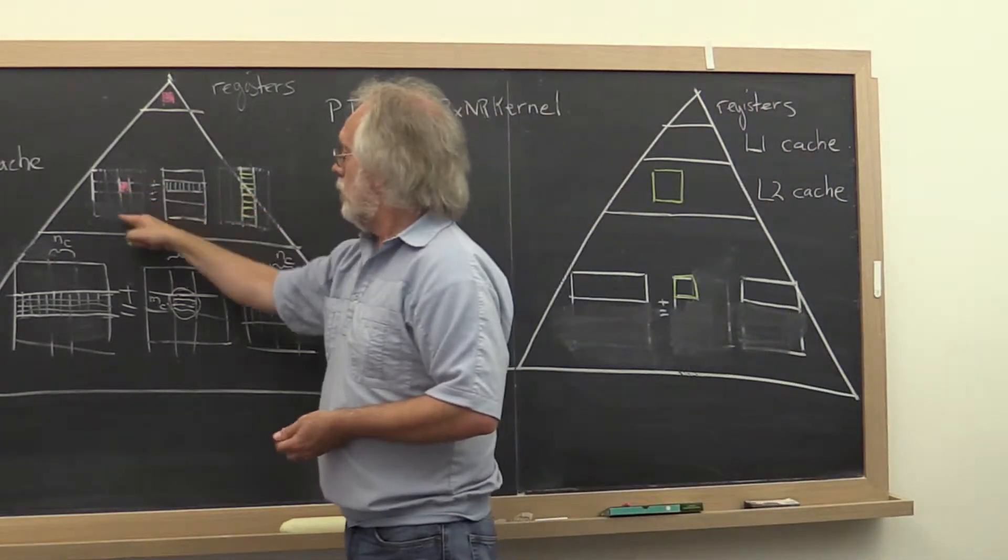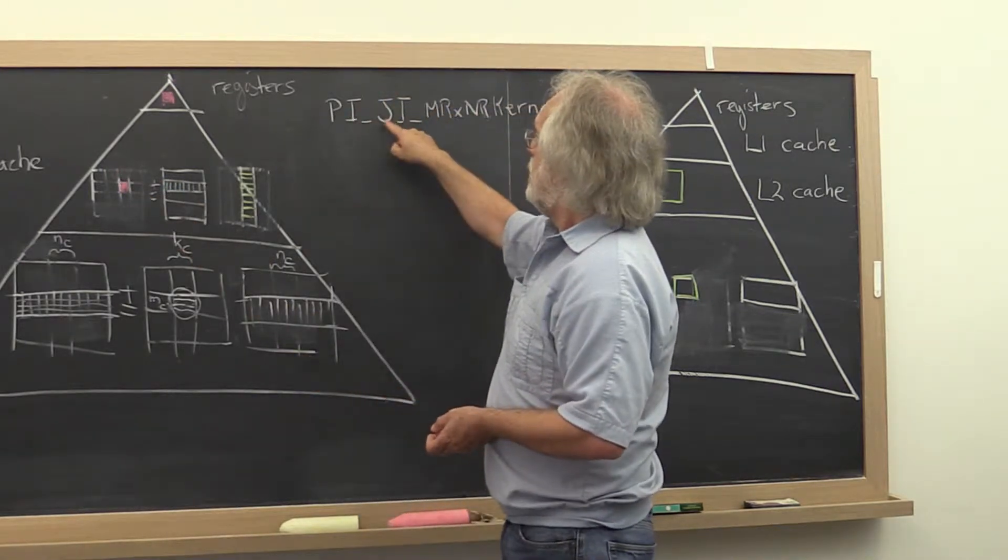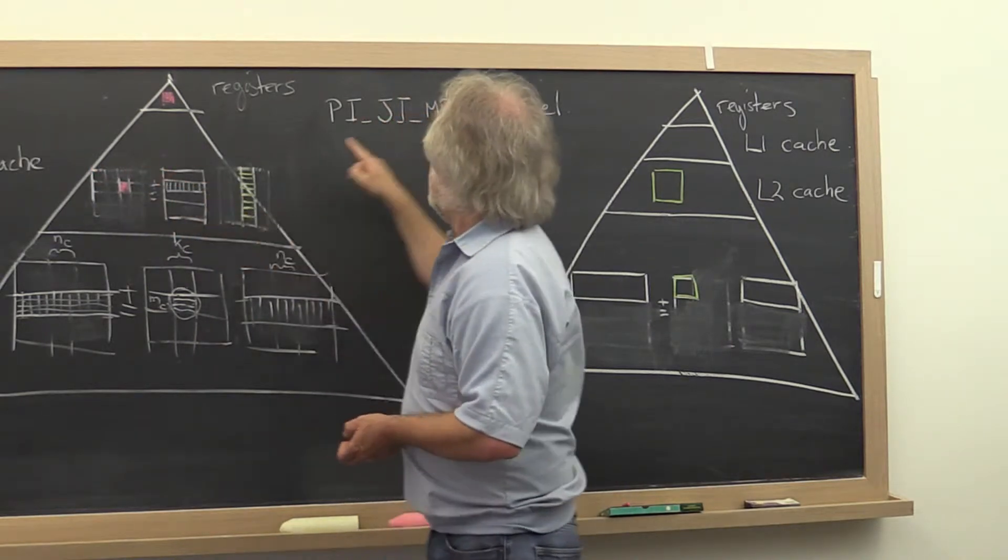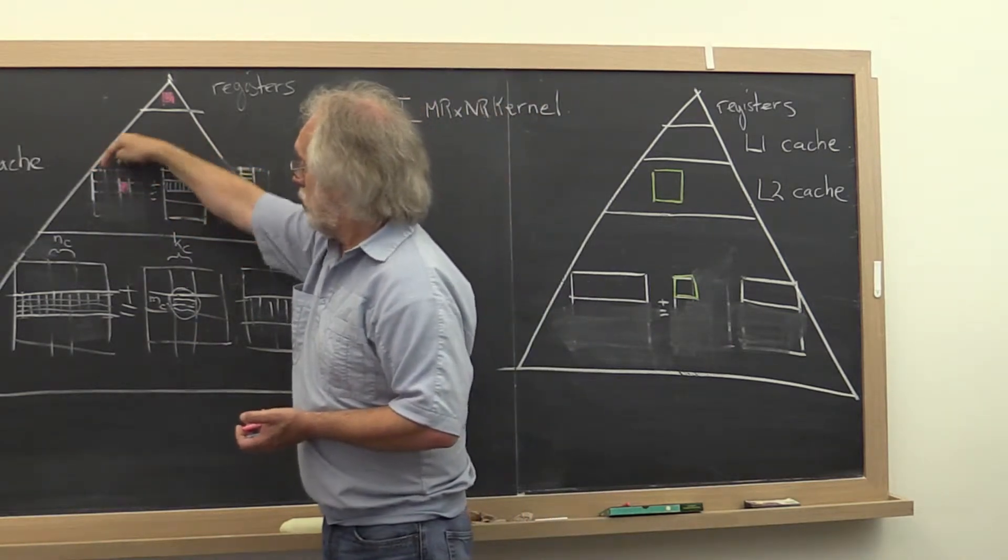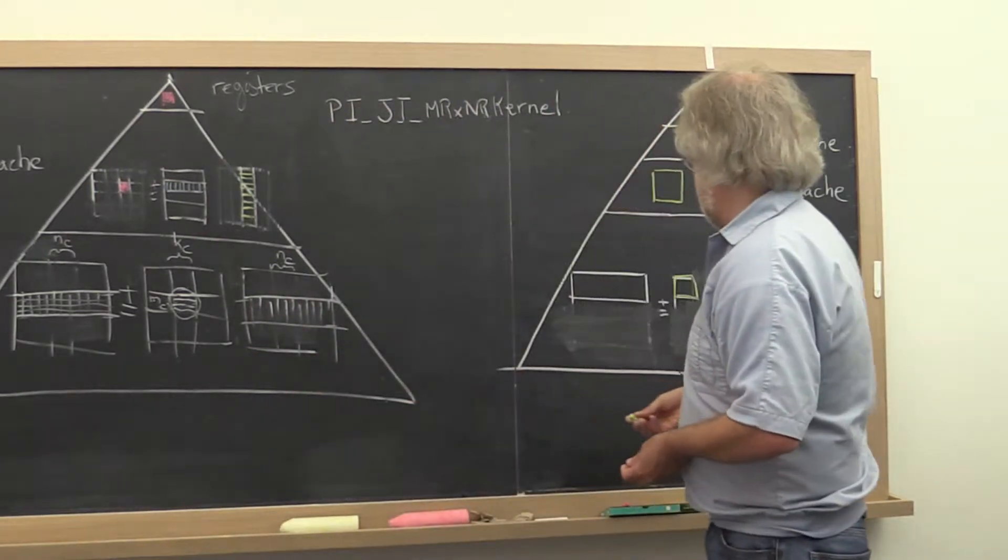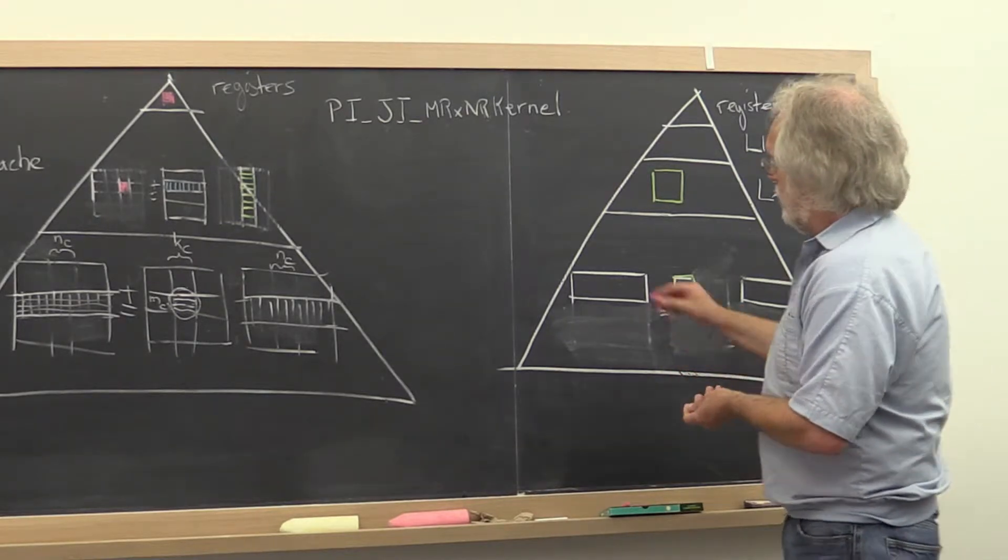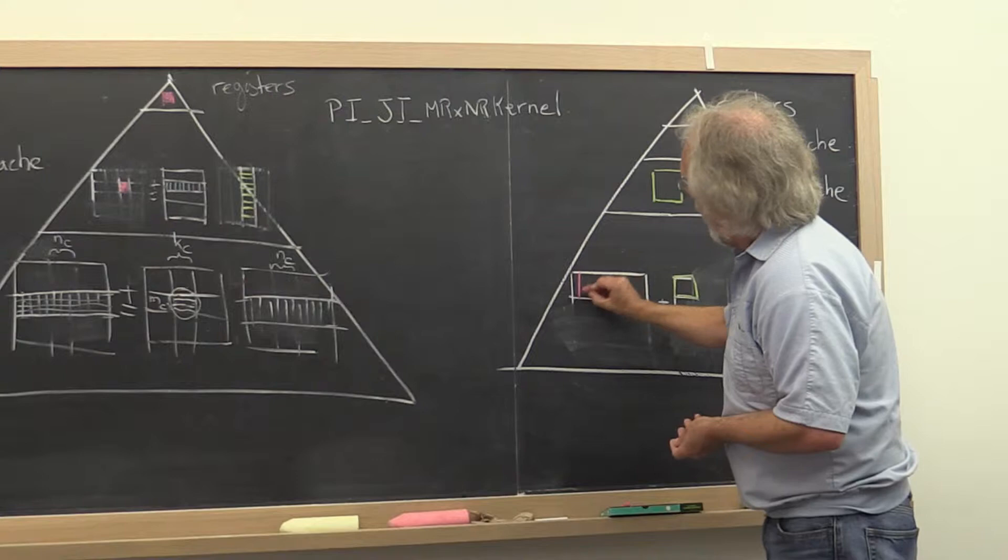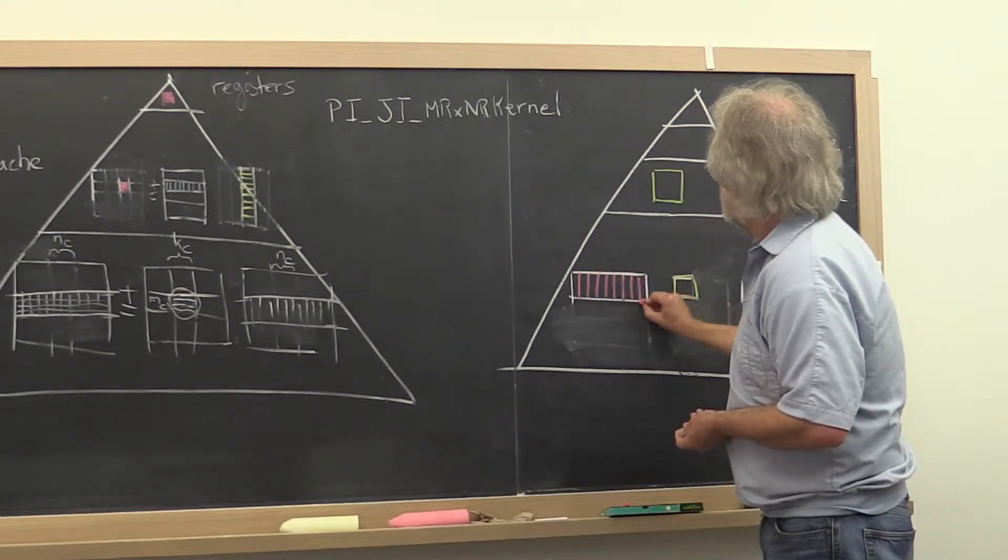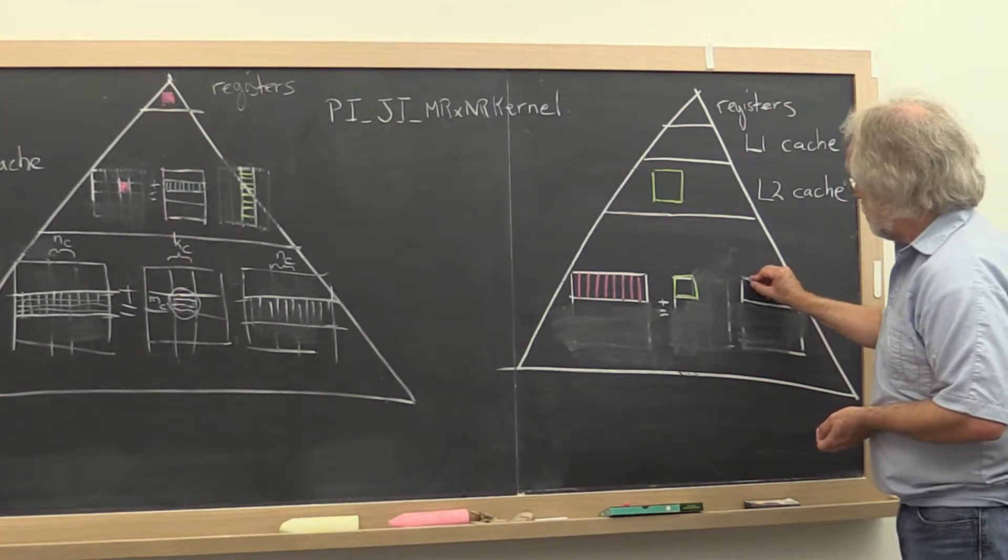Next, we're going to loop over all of the micro tiles of C. And we're going to do that by first looping over the J index. That means in this direction. And then once we fix the J index, we're going to march down that column. What that means is that our block of C is partitioned into these, let's call them micropanels as well. And our block of B is partitioned into micropanels.